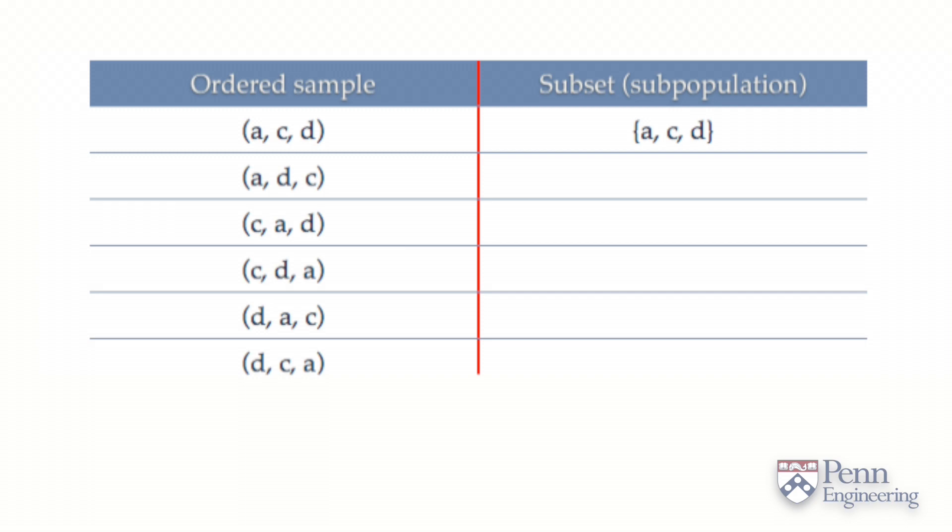So, you will get a subpopulation, A, C, D, corresponding to the green ball, the purple ball, and the peach colored ball. And the ordered sample on your left tells you all the arrangements of these three objects.